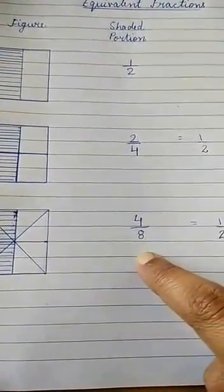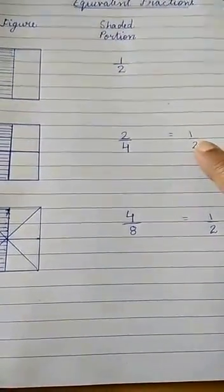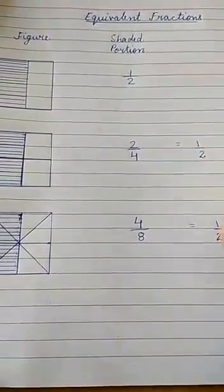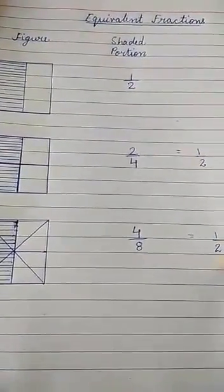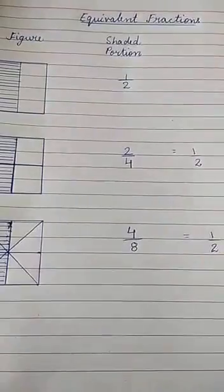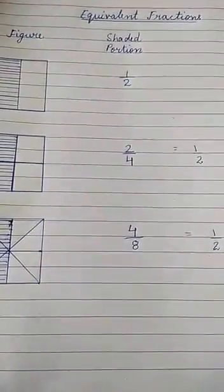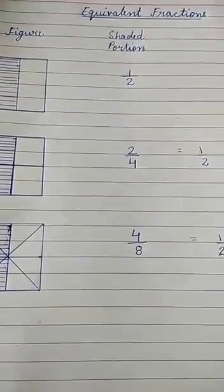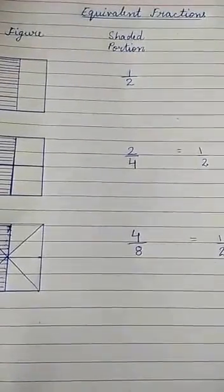Now, all these values can be reduced to half, that is 1 by 2. Therefore, the value of all the fractions remain same. They are known as equivalent fractions. Fractions having equal values are called equivalent fractions.